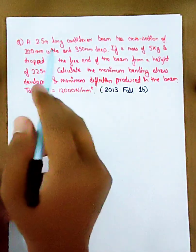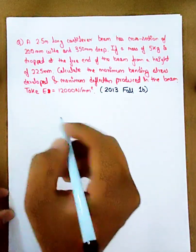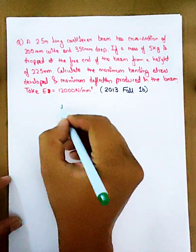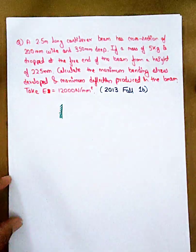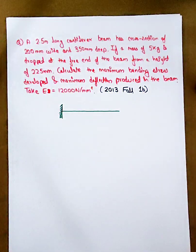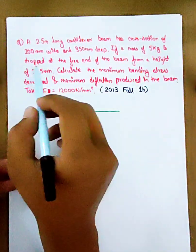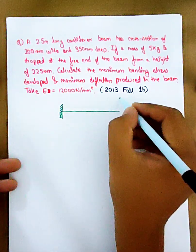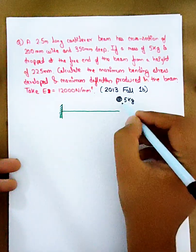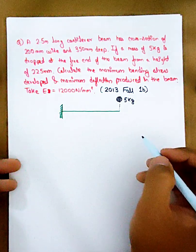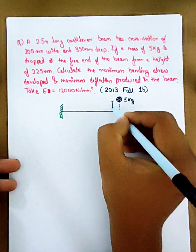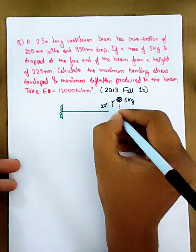The beam is a cantilever — one end is fixed and the other end is free. A 5 kg weight is dropped at the free end from a height of 225mm. The beam length is 2.5 meters, which equals 2500mm.